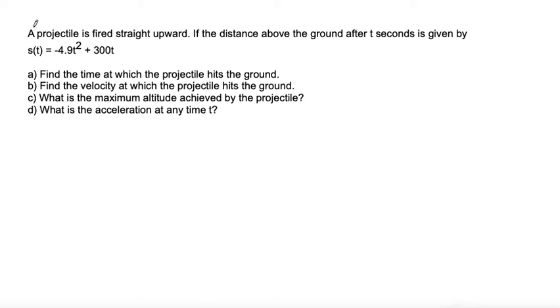This problem says a projectile is fired straight upward. If the distance above the ground after t seconds is given by s(t) equals negative 4.9 t squared plus 300t.